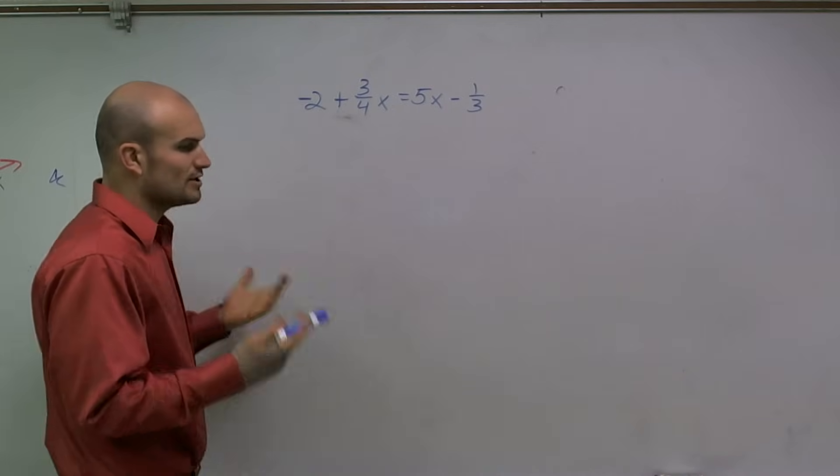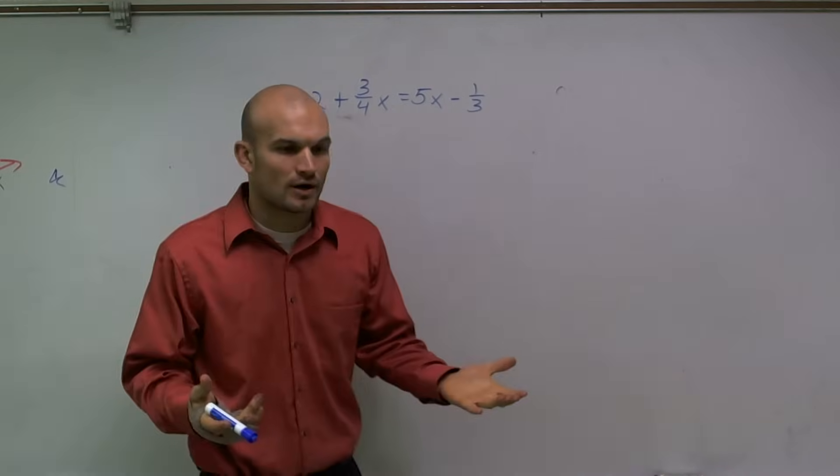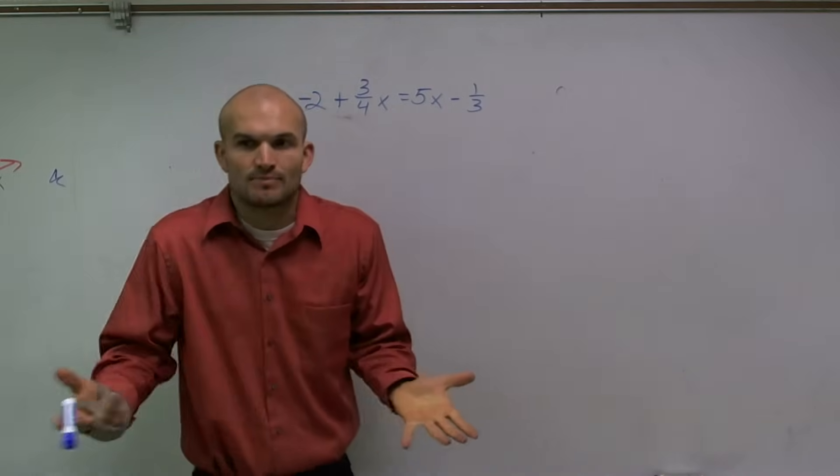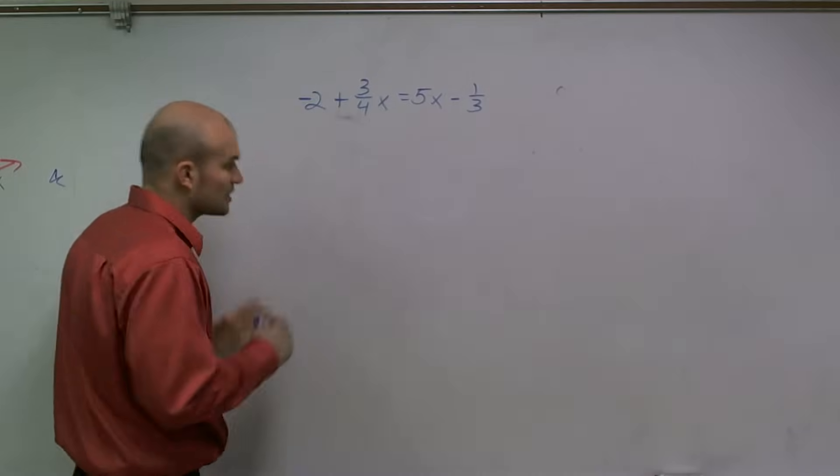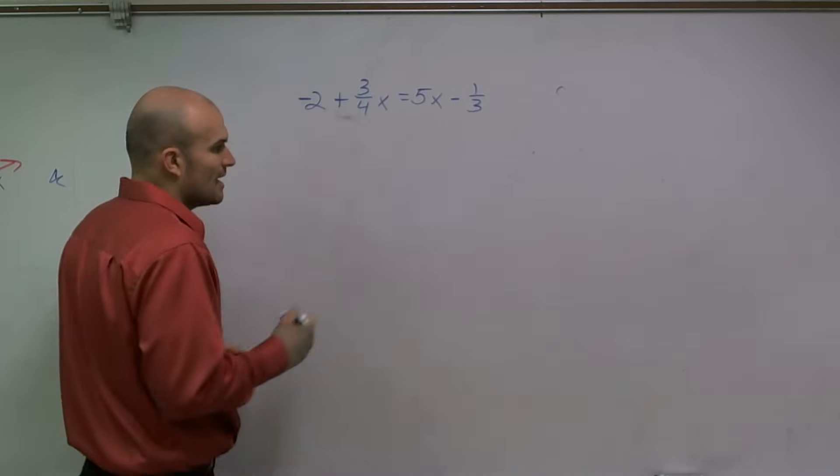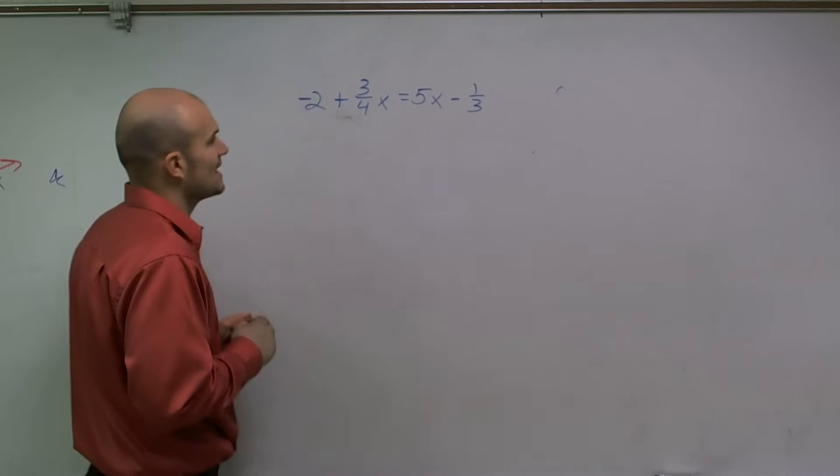When you multiply by 3 and multiply by 4, that's the same as multiplying by 12, right? Because 3 times 4 is 12. So to clear fractions for this problem, I'm going to multiply everything times 12.